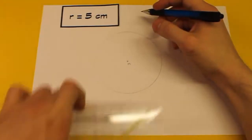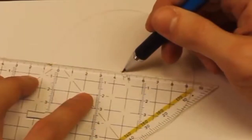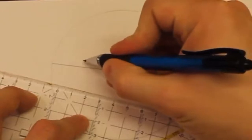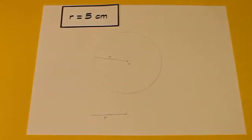Und zum Schluss, wenn wir jetzt diesen Kreis haben, nehmen wir noch ein Lineal und zeichnen den Radius ein. Vergesst nicht, ihn mit einem kleinen r zu beschriften. Und das wär's. Fertig sind wir mit unserem ersten Kreis.